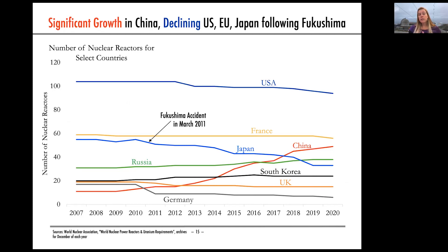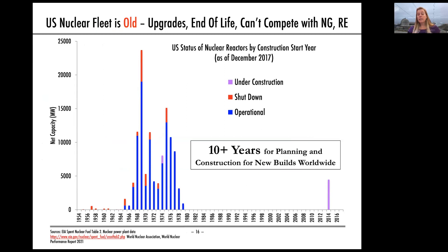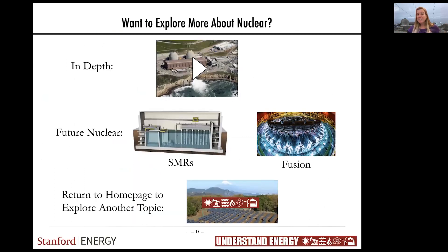There has been significant growth in nuclear power in China in recent years, but in the United States, Europe, and Japan — especially following Fukushima — nuclear energy is declining. In the U.S. in particular, the nuclear fleet is old; we stopped building plants in the late 1970s. They need upgrades, they're at end of life, and they cannot compete in wholesale markets with natural gas, wind, and solar. We are seeing nuclear power plants shut down without new builds replacing them.